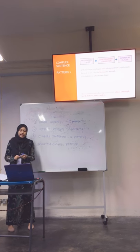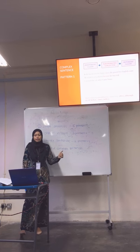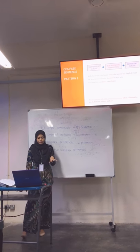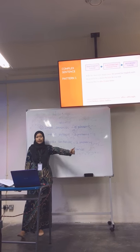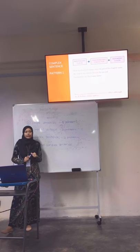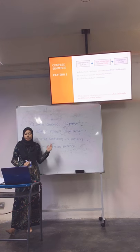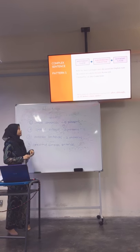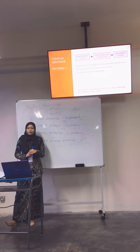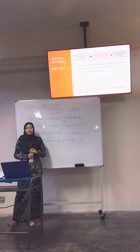Proceeding to the next sentence type, which is complex sentence — we have 2 patterns. Pattern 1 consists of independent clause plus subordinating conjunction plus dependent clause. A dependent clause begins with a subordinating conjunction, such as: after, although, as, if, before, since, unless, because. For example: 'Kelly has been very happy since she passed her English exam.' 'Kelly has been very happy' is the independent clause, 'since' is the subordinating conjunction, and 'she passed her English exam' is the dependent clause. Number 2: 'He went to see a doctor because he was sick.' Number 3: 'I watched the cup after I can go' — 'I watched the cup' is the independent clause, 'after' is the subordinating conjunction, and 'I can go' is the dependent clause.